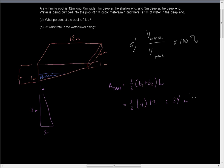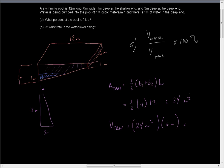To find the volume of the trapezoid solid, the volume equals the base area times the height. We've already got the area of the base as 24 square meters, so we just multiply by the six-meter width dimension. We take 24 meters squared times six meters, and for that we get 144 cubic meters — that's the volume of the whole pool.